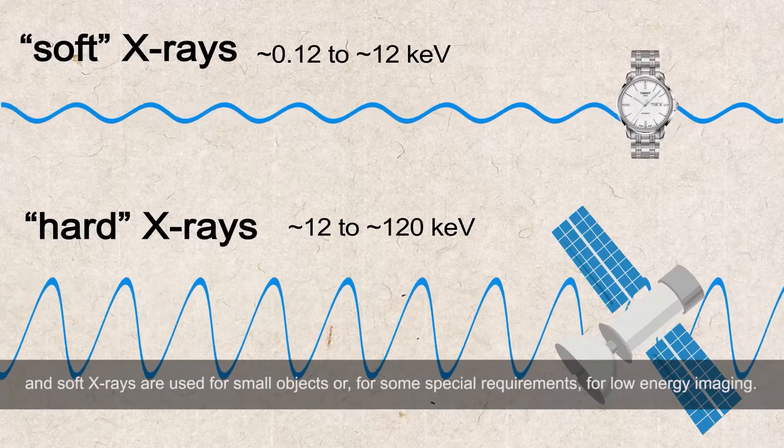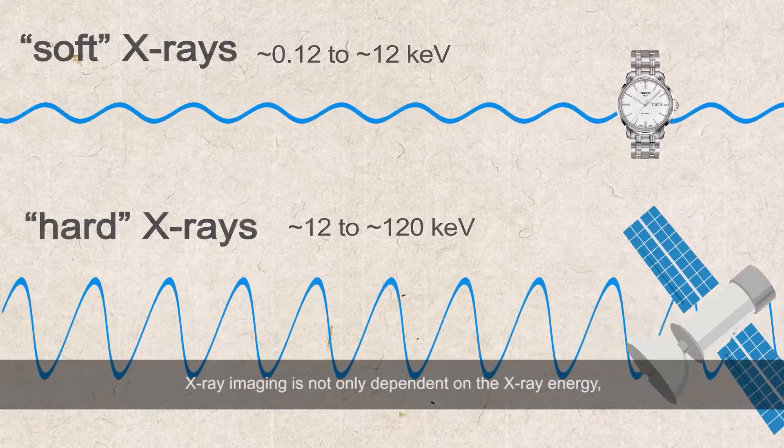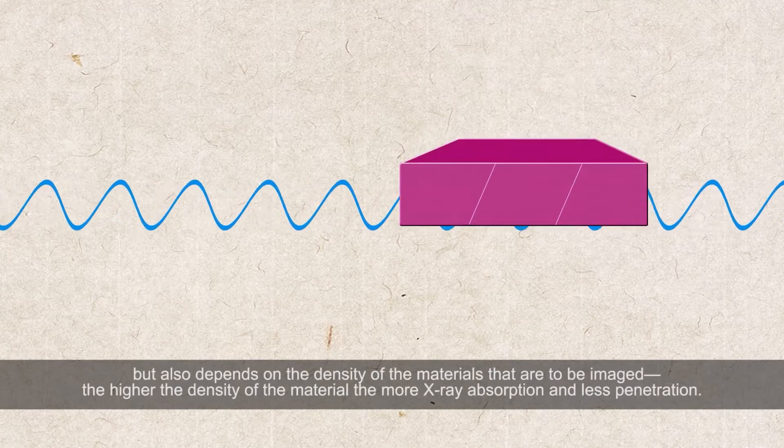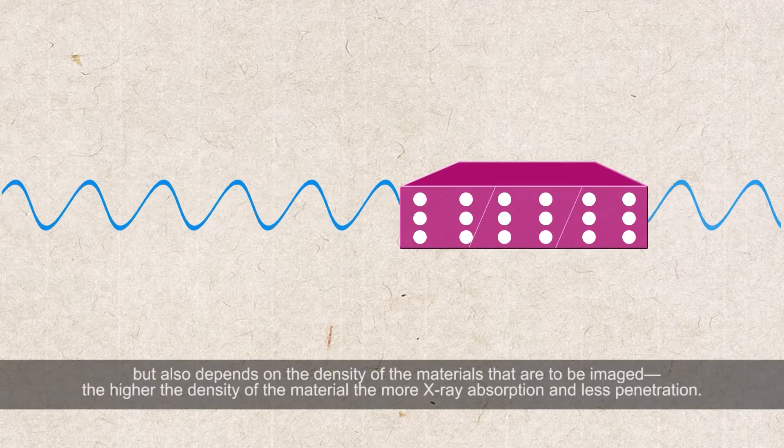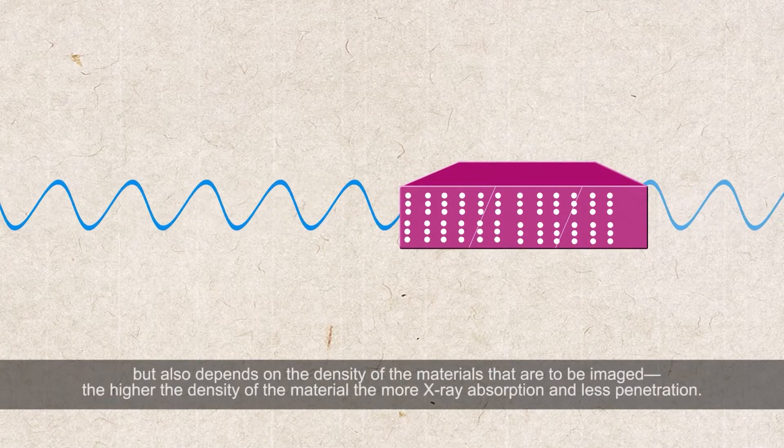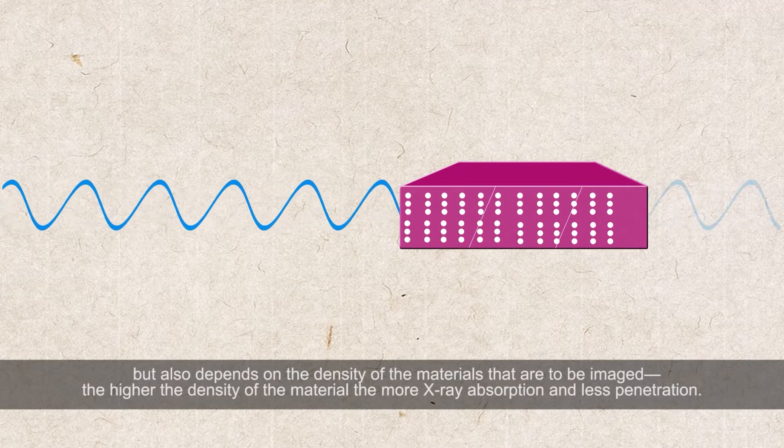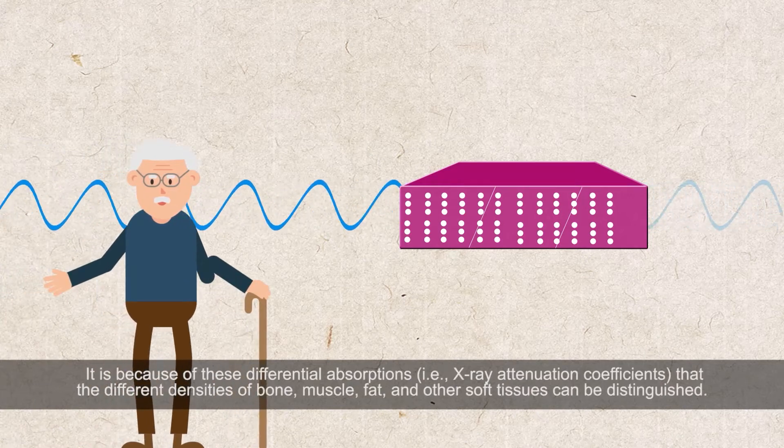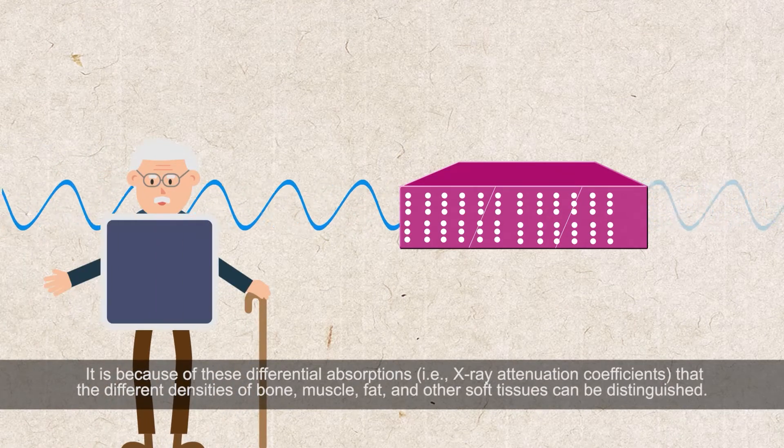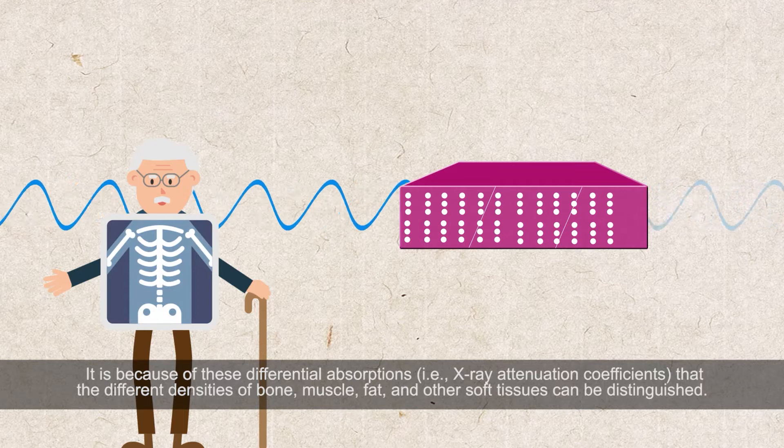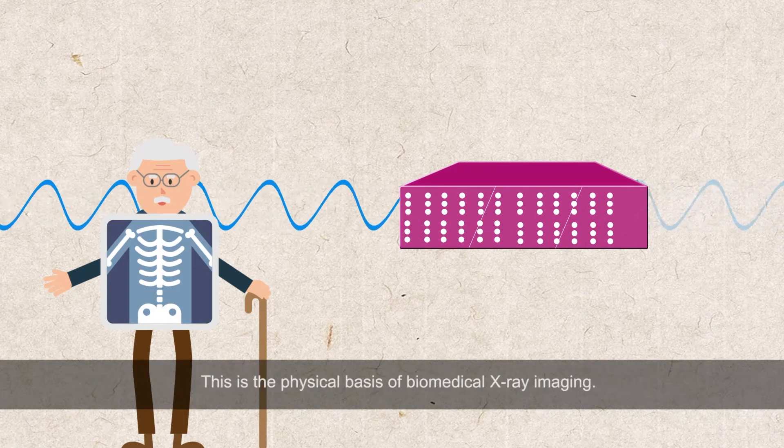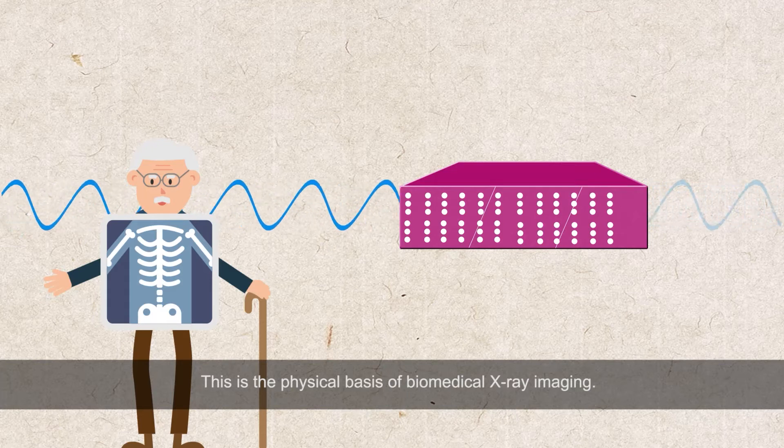X-ray imaging is not only dependent on the X-ray energy but also depends on the density of the materials that are to be imaged. The higher the density of the material, the more X-ray absorption and less penetration. It is because of these differential absorptions that the different densities of bone, muscle, fat, and other soft tissues can be distinguished. This is the physical basis of biomedical X-ray imaging.